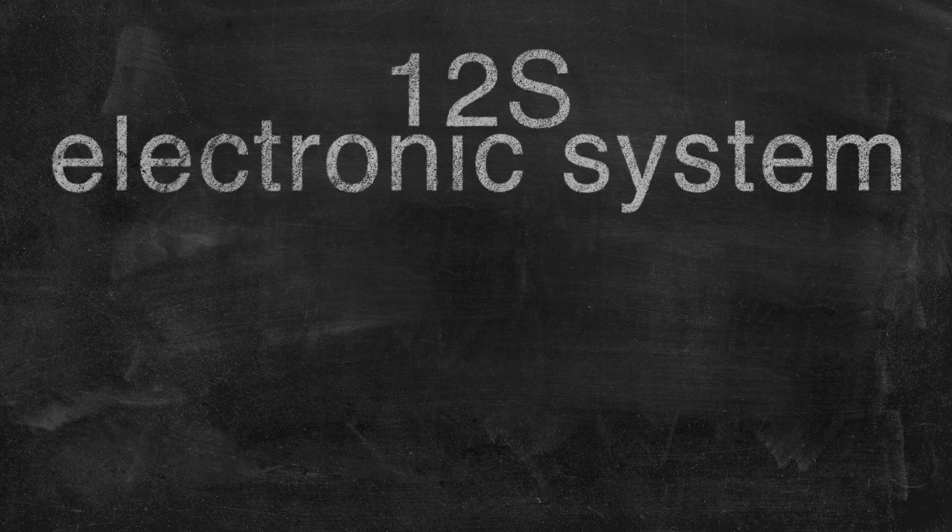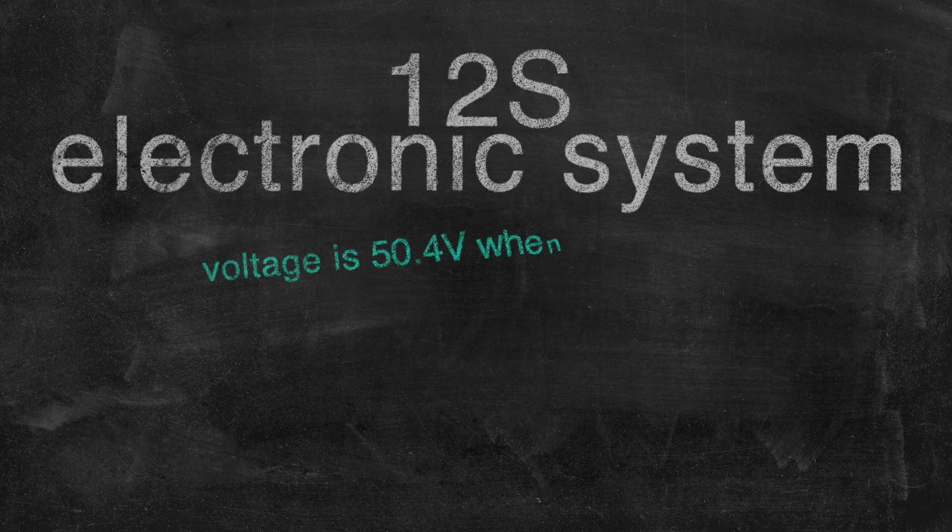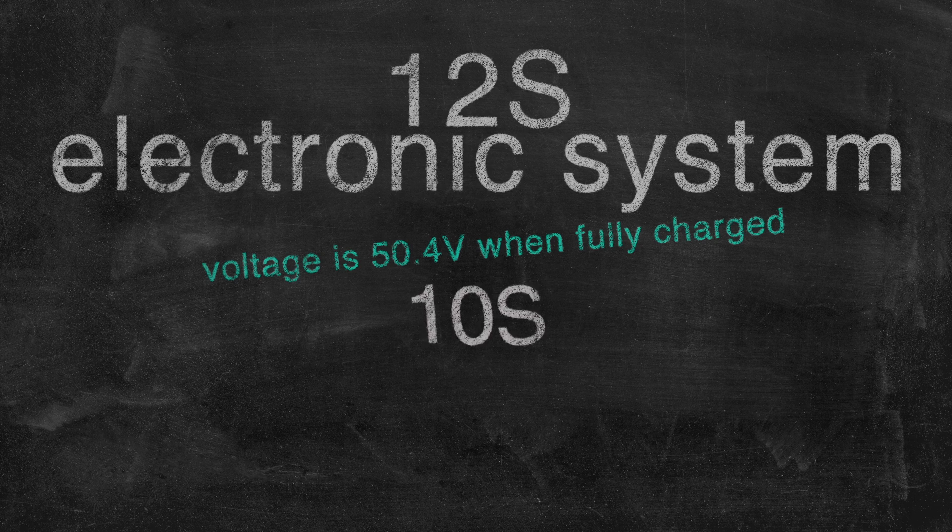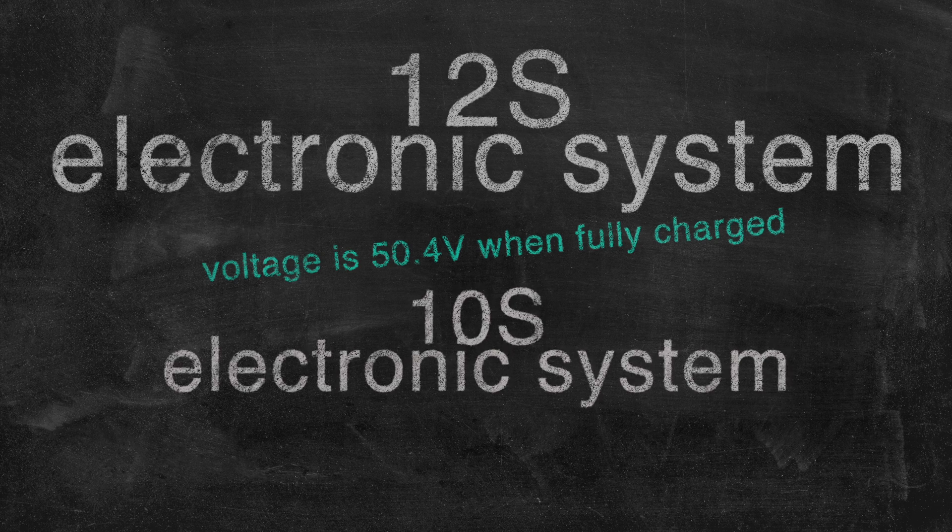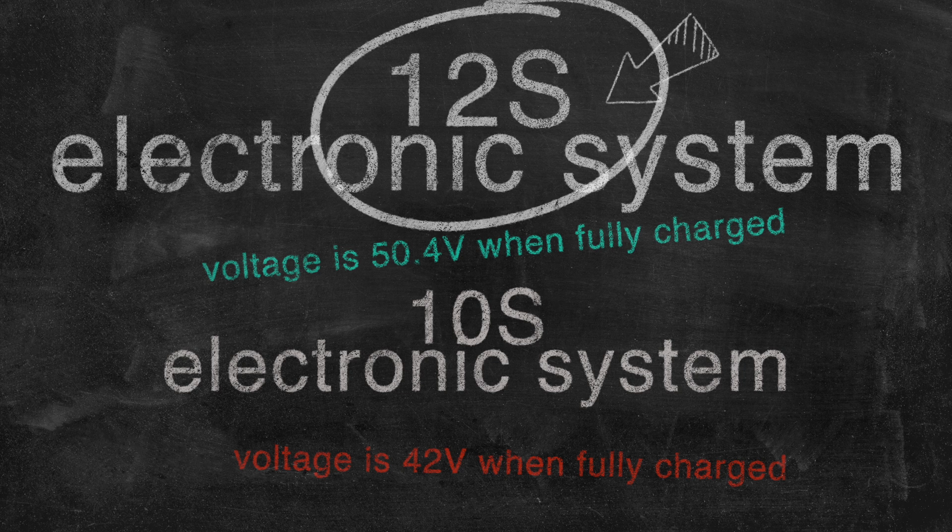Therefore, the 12S electronic system, voltage is 50.4 volts when fully charged, is far superior to the 10S electronic system, voltage is 42 volts when fully charged, which is commonly used in the market.